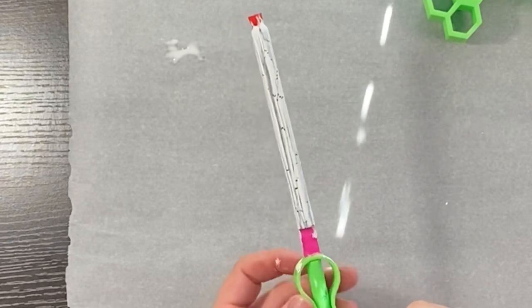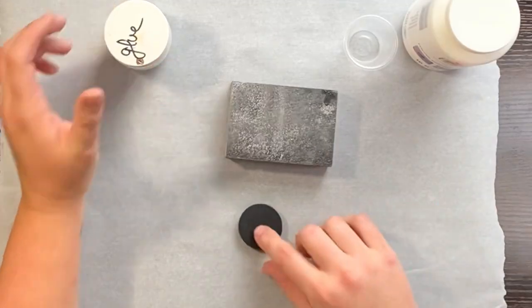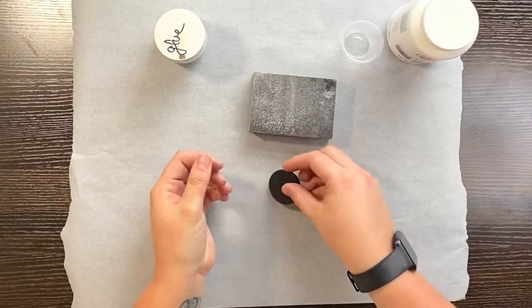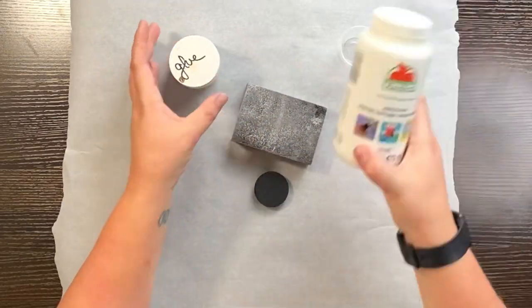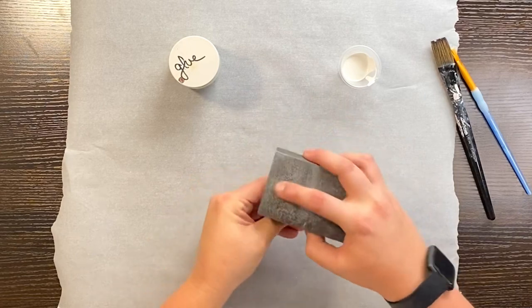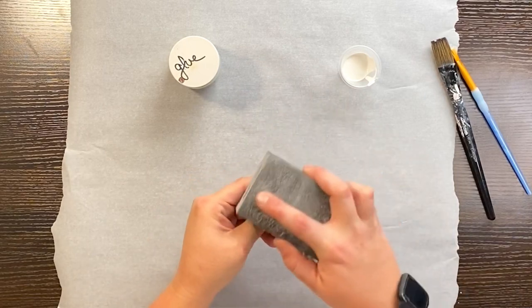See how gorgeous these crackles are? So pretty. So now I'm moving on to the pop socket. I'm going to do the same thing, but I need to prep my pop socket first, which means sanding and wiping it clean with a baby wipe or a rag with alcohol.